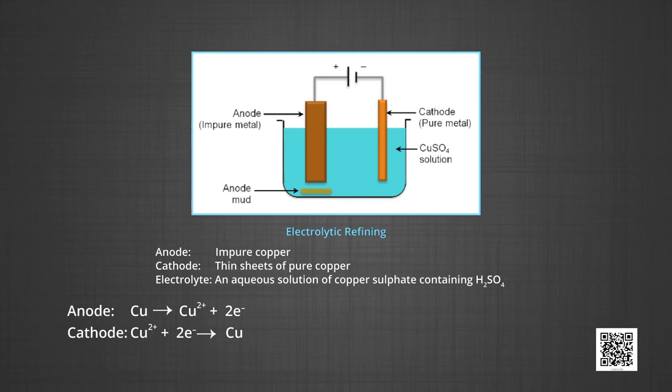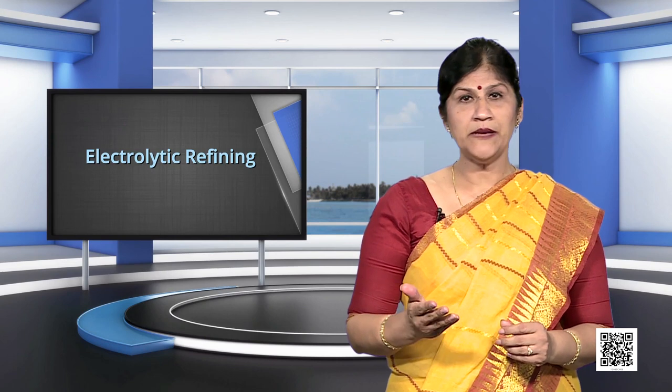Which contains antimony, selenium, tellurium, silver, gold and platinum. Recovery of these elements may meet the cost of refining. Zinc, silver, aluminium and lead may also be refined in this way. The metals obtained are of very high purity of the order of 99.9 percent purity.